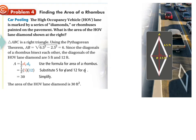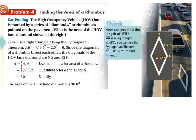And we're already here at the end of this lesson — finding the area of a rhombus. In this case it says: carpooling. The high occupancy vehicle — HOV — lane is marked by a series of diamonds, or rhombuses, painted on the pavement. What's the area of the HOV lane diamond shown? They've given you 2.5, so the whole diagonal is going to be 5. But they didn't give us this other length — they gave us 6.5. How can we find the length of AB? In a right triangle we know one leg and the hypotenuse, so you can use the Pythagorean theorem. I'm going to say AB squared plus BC squared equals AC squared.